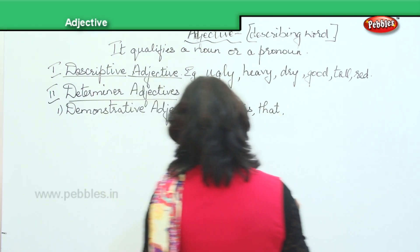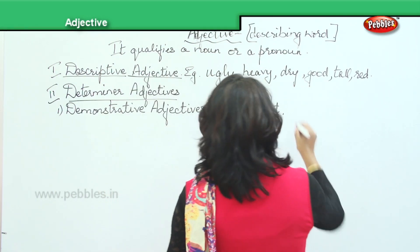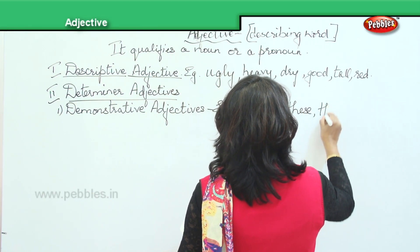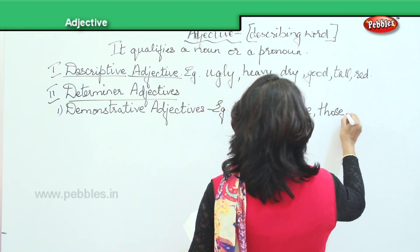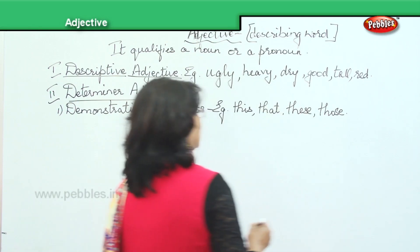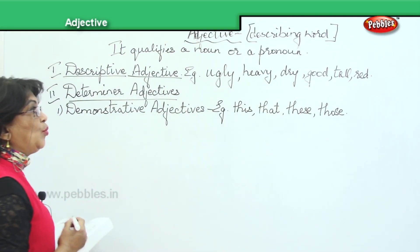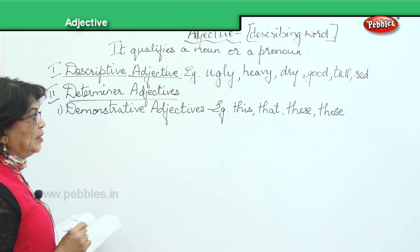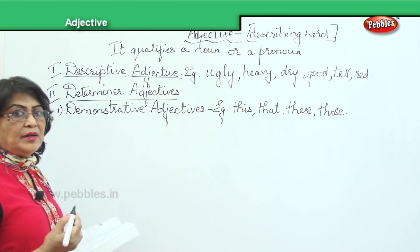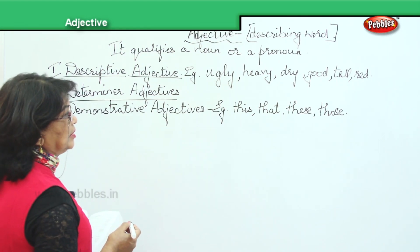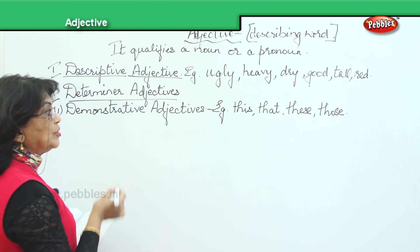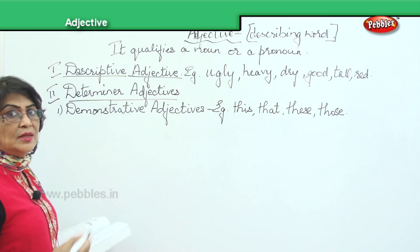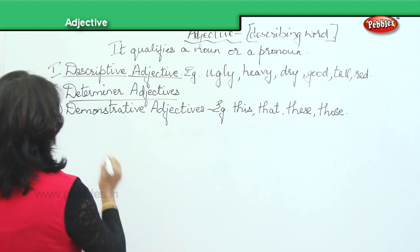Demonstrative adjectives — examples are: this, that, these, those. For example, 'She wants this book' — here 'this' becomes an adjective. 'He spoke to those boys' — 'those' is an adjective.